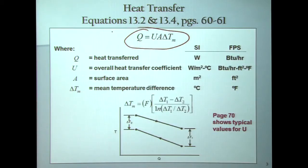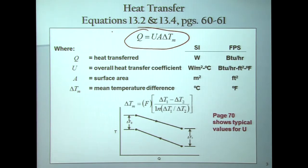Q is the heat transferred from one stream to the other — it's called the duty, the rate of heat transfer. U is the overall heat transfer coefficient; it's essentially the inverse of the resistance that the heat faces when going from one stream to the other. A is the surface area of your heat exchanger, and delta T mean is your driving force, or your mean temperature difference.